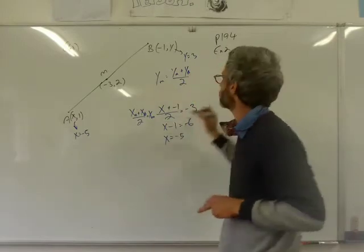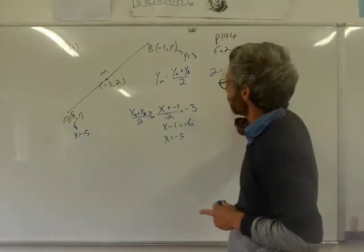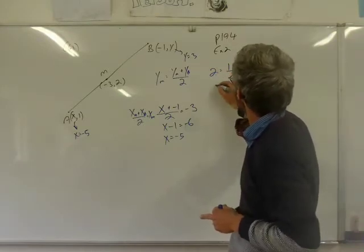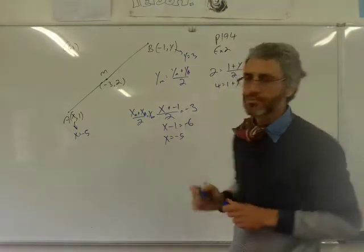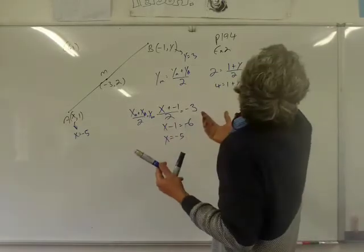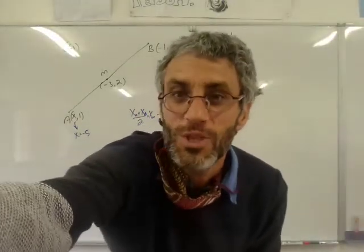So 2 must be equal to Y1, which is 1, plus Y divided by 2, divided by 2, 4 equals 1 plus Y, Y equals 3. All right guys? You have to understand that. It's easy, it's easy. I'm going to just pause here and we're going to do the second bit which is a bit tricky.